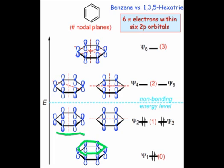Moving up in energy, we next see two levels at the same energy, called degenerate. Both of these levels possess one nodal plane.